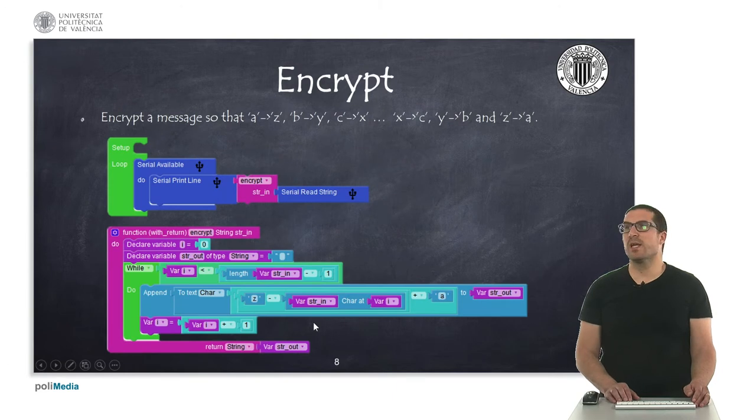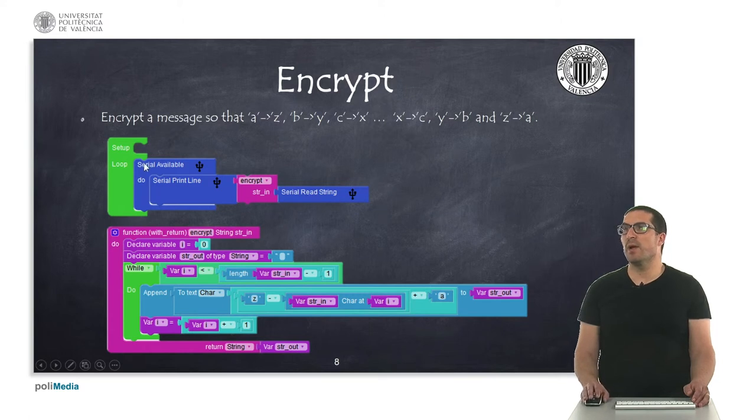In this second example, what I'm doing is I'm encrypting a message. Actually what I'm doing is, whenever I have characters available on the serial buffer, I'm reading the string and pass this string into a function. This function will return an encrypted message and this is what I will print on the console.